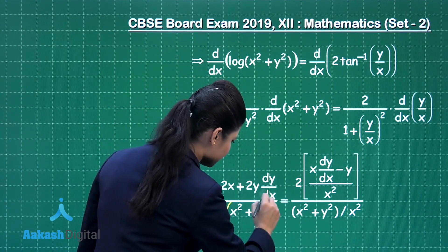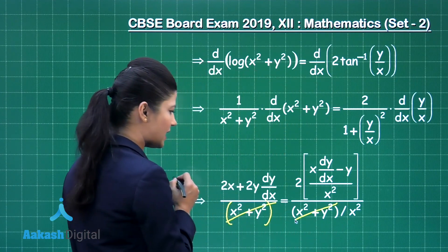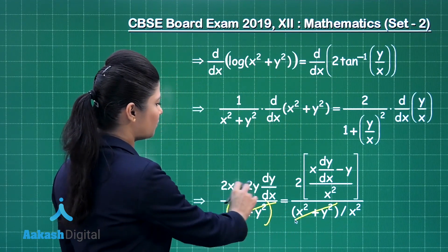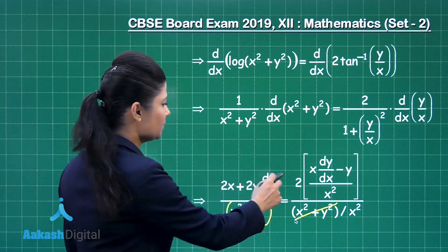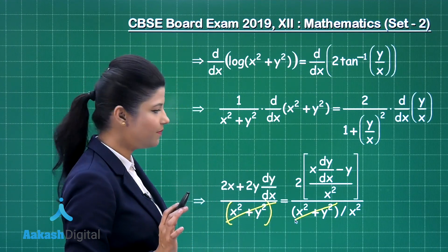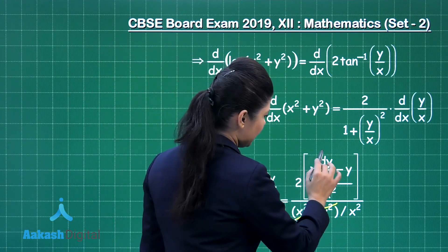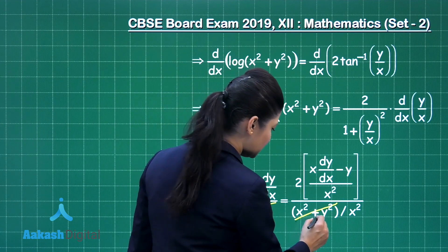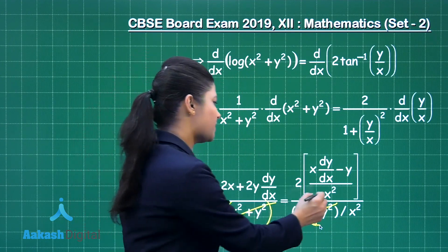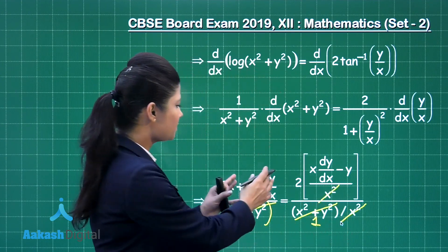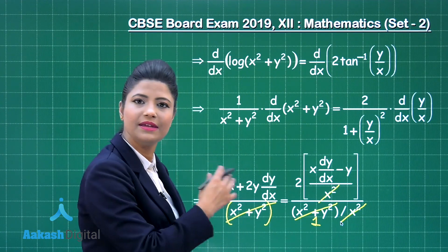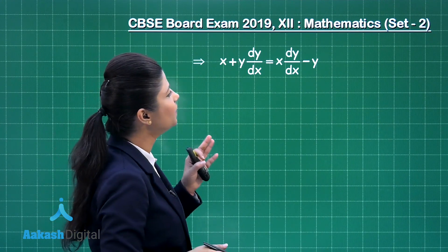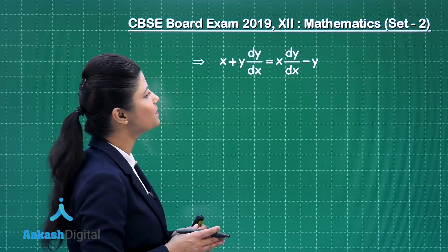You will observe that x squared plus y squared cancels on both sides. You can easily take 2 common from both terms on the left-hand side, and 2 is already there on the right-hand side, so the 2s cancel. This leaves x times dy/dx minus y upon x squared on one side and 1 upon x squared on the other. The x squared terms also cancel, and the expression reduces to x plus y times dy/dx equal to x times dy/dx minus y.